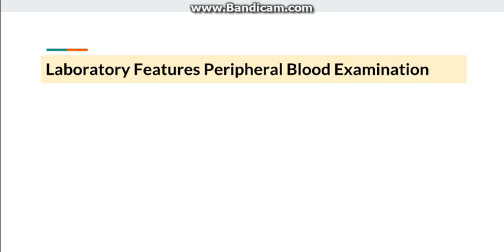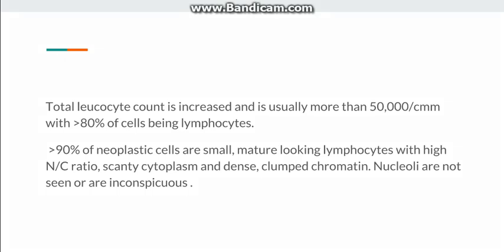Discussing the laboratory features, firstly the peripheral blood examination. The total leukocyte count is increased because this primarily involves the WBC series. The DLC is increased and is usually more than 50,000 per cubic mm — recall the normal WBC count is less than 11,000 per cubic mm. Mostly 80% of the neoplastic cells are lymphocytes.